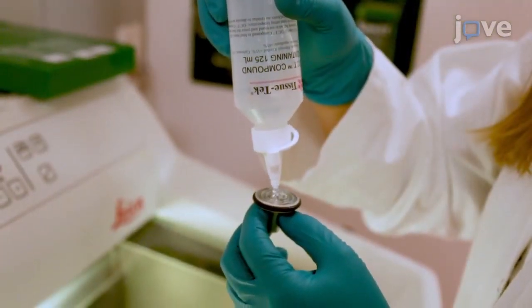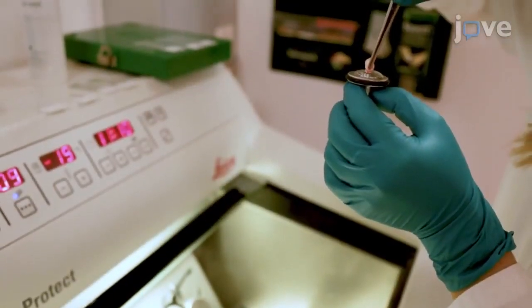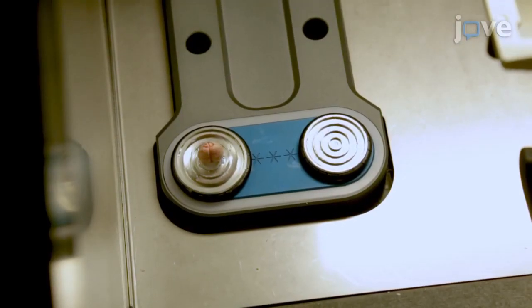Then, cover the tissue holder with embedding medium outside the cryostat and quickly place the frozen tissue specimen in the desired orientation while the embedding medium is still liquid.